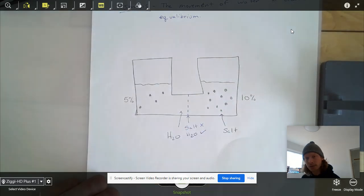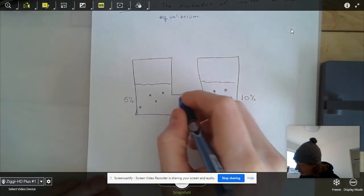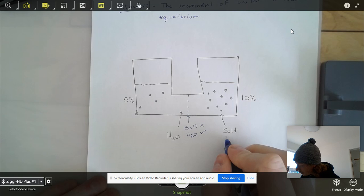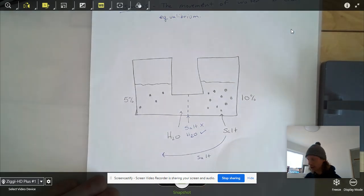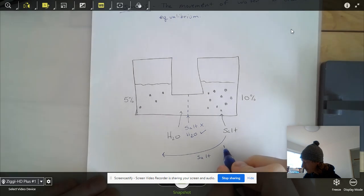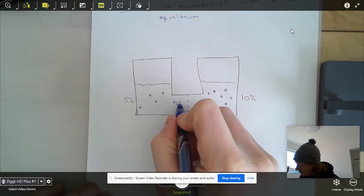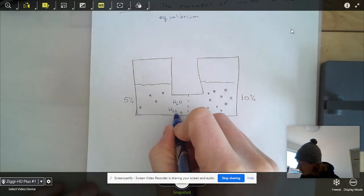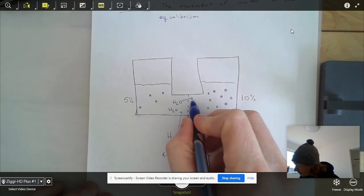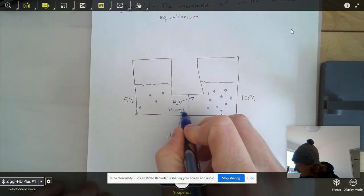The salt cannot pass through. The salt wants to be going this way. The salt wants to go from high concentration to low. But that membrane is stopping it. So what's actually going to happen is that water is going to move. Now, why would the water move?